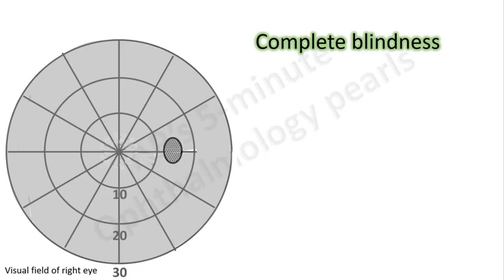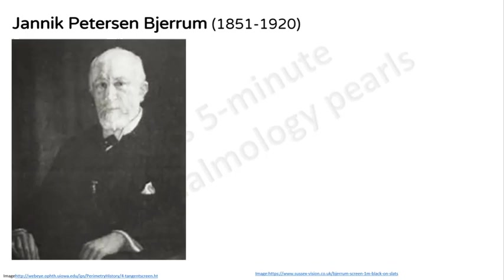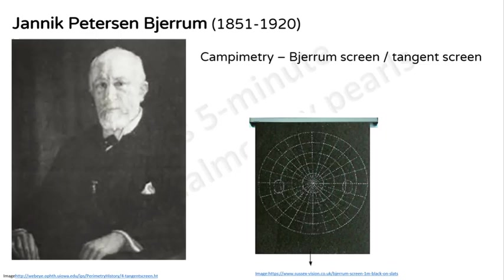Finally, no discussion on visual fields is complete without acknowledging the tremendous work done by two ophthalmologists. Dr. Jannik Peterson Bjerrum reintroduced and popularized campimetry with a landmark paper in 1889. Campimetry is visual field testing with a tangent screen first introduced by Von Graefe. Bjerrum's name is associated with the tangent screen, Bjerrum's area and scotoma which we have just discussed.